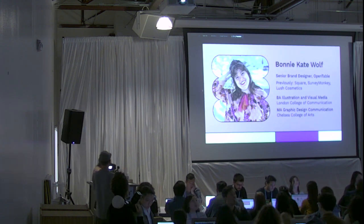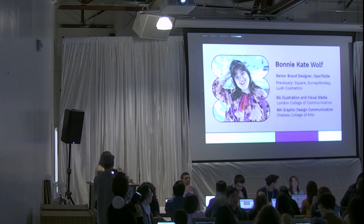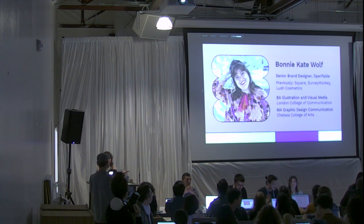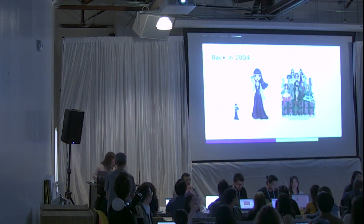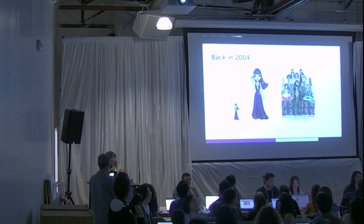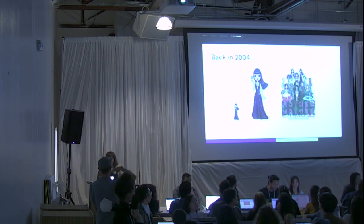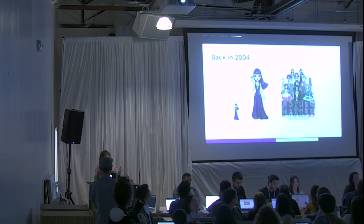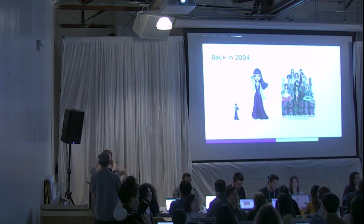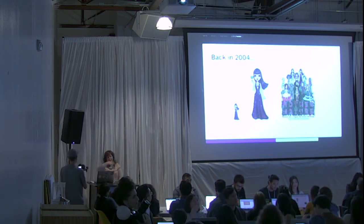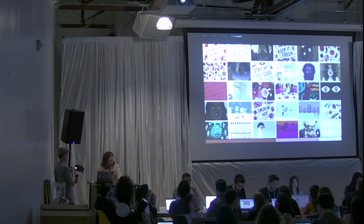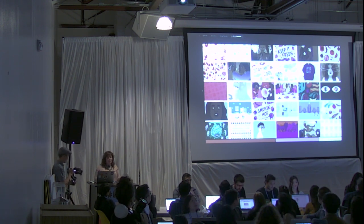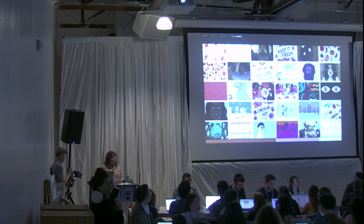This is who I am. I am Bonnie Kate Wolfe and I am a senior brand designer at OpenTable. Before that I was at Square, SurveyMonkey, and Lush Cosmetics. I have a bachelor's in illustration and a master's in graphic design, and I got both of those while I was living in London for five years. Back in 2004 when I was about 12, I was making little pixel people and working with other artists to create collaborative drawings. You'd have one artist make the person with many poses, then others would draw the hair, face, and clothes. That pixel art translates pretty directly into what I do today — a lot of drawing, iconography, and typography. It's kind of come full circle 15 years later.